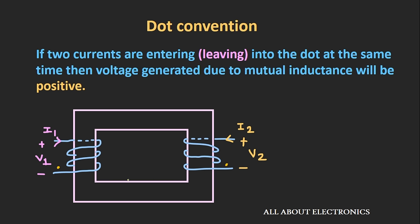In the same example, if we put a dot on the other side of the coil, the current is leaving the dots at the same time, so the induced voltage in both coils is still positive. One more thing about the dot: whatever polarity of voltage appears across the dotted terminal, the same polarity will appear at the other dotted terminal. So even if you don't know the value or direction of currents I1 and I2, you can still find the polarity of the induced voltage.